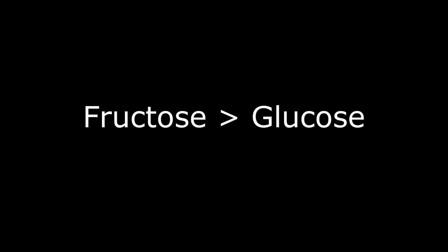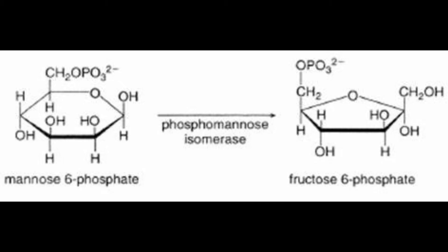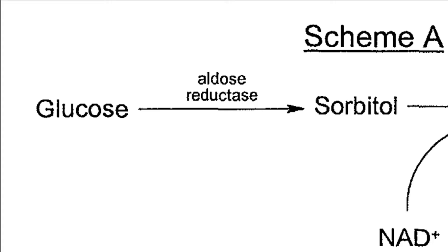Fructose can also be obtained from mannose. Hexokinase phosphorylates it, producing mannose 6-phosphate, which in turn is reversibly isomerized to fructose 6-phosphate by phosphomannose isomerase.